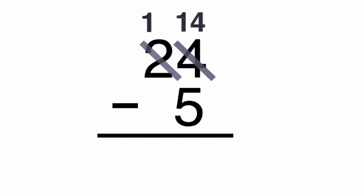14 minus 5 equals 9, so put a 9 below the line. Since there is nothing to subtract from the 1 remaining in the tens place, bring the 1 down below the line. The answer, or difference, is 19.